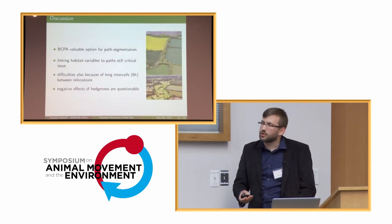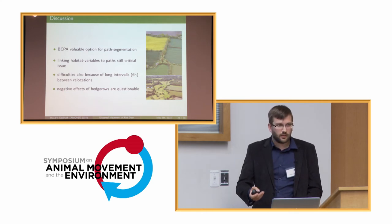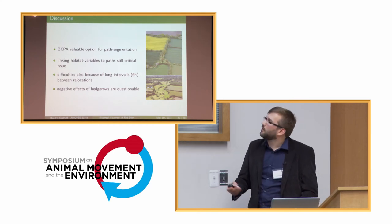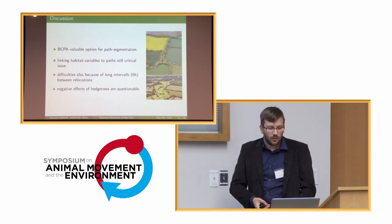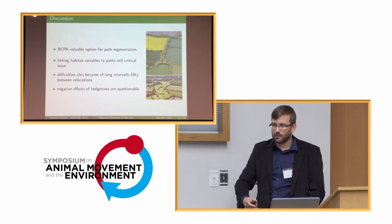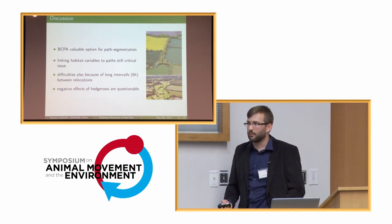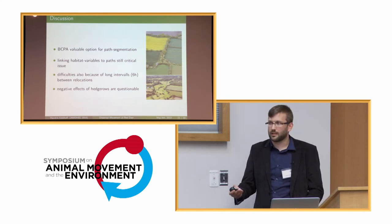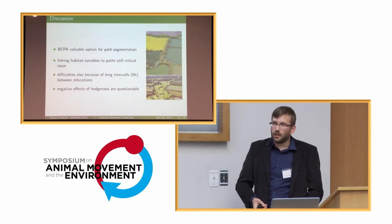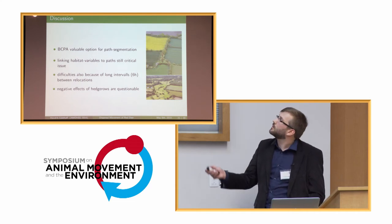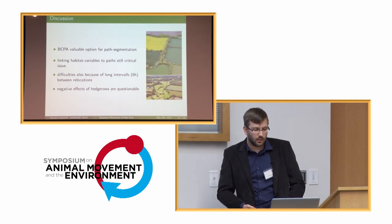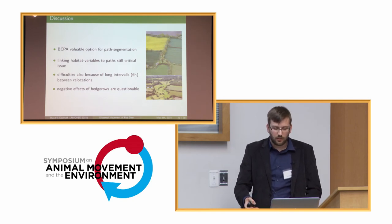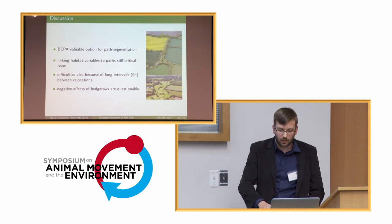In discussion, the BCPA is a really valuable tool for segmenting a path into different behavior modes. However, linking those segments to habitat variables is quite critical, especially given six-hour intervals between relocations — a lot can happen in six hours with a mobile species like red deer. An additional concern is that hedgerows, which prior literature indicates should have a positive effect on dispersal movement, showed a negative effect here, suggesting I may need to reconsider other methods to implement this habitat variable.